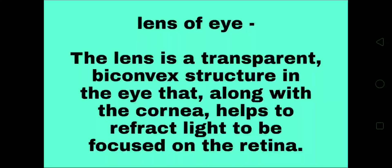The lens of the eye is a transparent, biconvex structure that, along with the cornea, helps to reflect light to be focused on the retina.